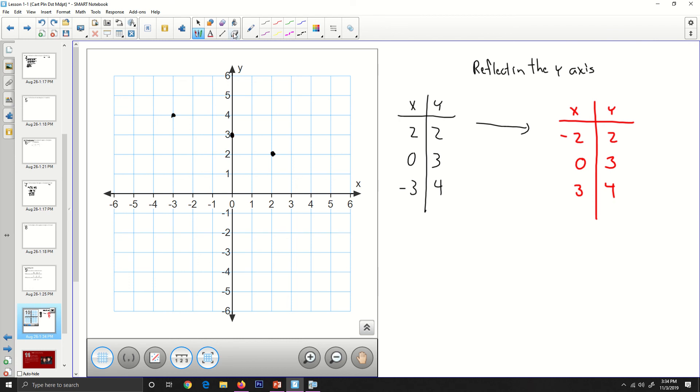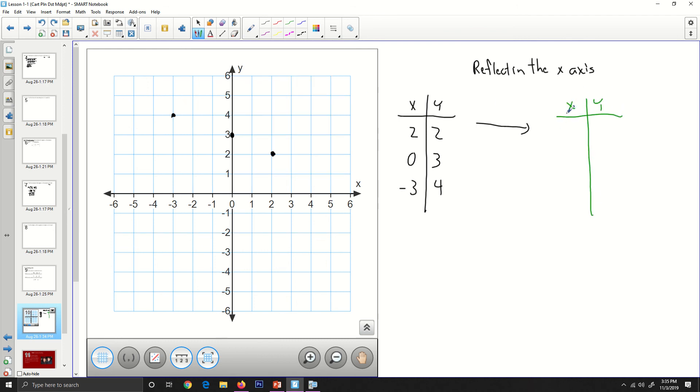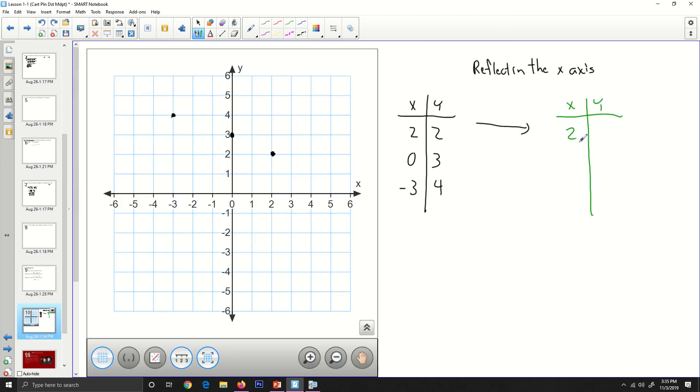All right, let me get rid of those, and let's say we want to reflect in the x-axis. Let's use green this time. And so if we want to reflect in the x-axis, for every point x, y, we're going to have a new point x, negative y. And so the x's stay the same, so we'll go 2, and this changes, it becomes negative 2. 0, negative 3. Well this time we're changing the y-values, so we'll have negative 3 there. And negative 3, 4, since the x-value does not change, it stays the same, and we have negative 3, 4.